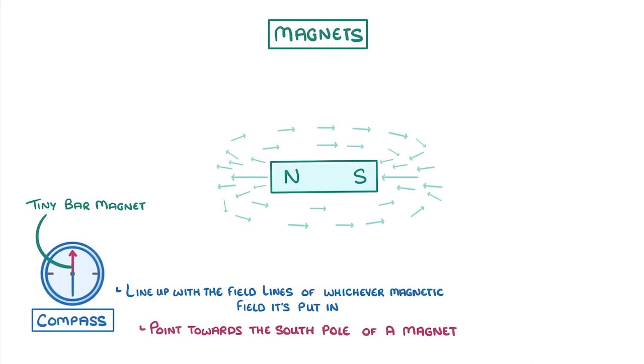So to get our field lines, all we need to do is join up our arrows. If you want to see how this works in real life, we've linked a live video of it down below in the description.